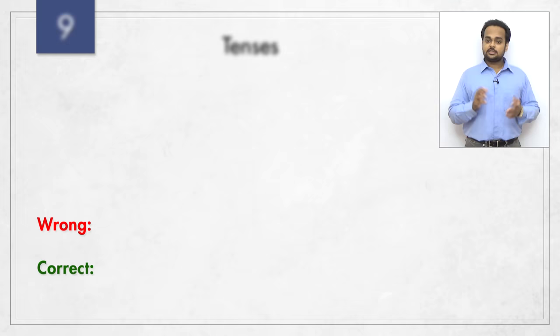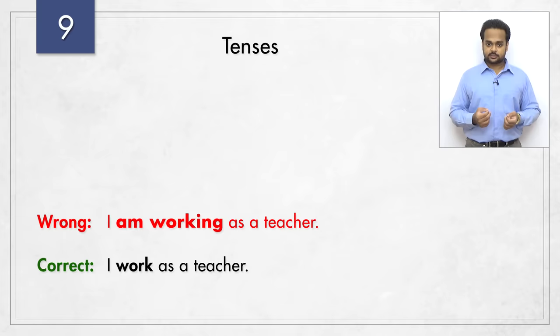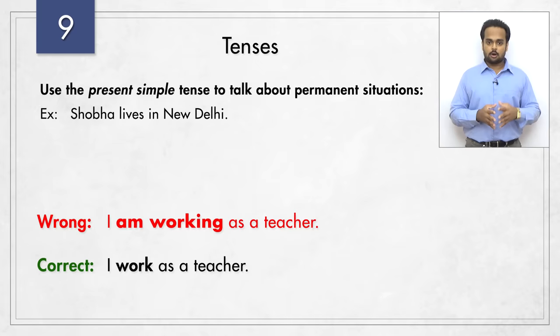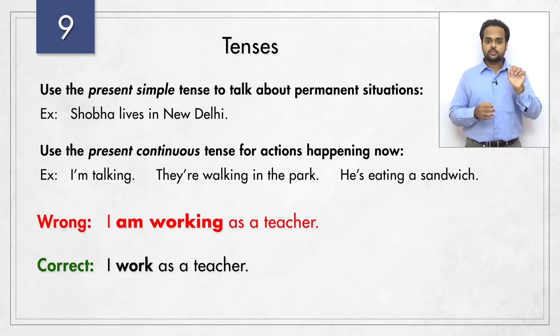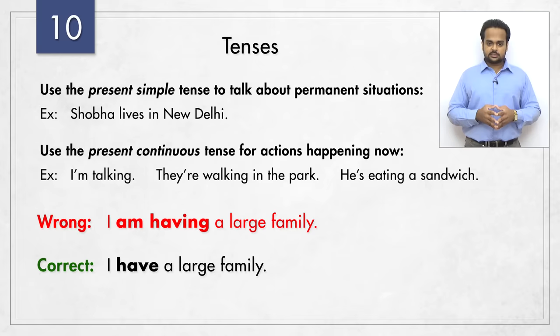Let's now turn to errors in the tenses. Our first sentence is 'I am working as a teacher' – this is wrong. 'I work as a teacher' is correct. Use the present simple tense to talk about your occupation or other permanent situation. For example, 'Shobha lives in New Delhi.' You only use the present continuous tense for actions that are happening right now – 'I am talking,' 'they are walking in the park,' 'he is eating a sandwich,' etc. Here's a similar error – 'I am having a large family.' You should say 'I have a large family,' because this expresses a general situation, not an action happening right now. What about 'I don't think she is recognizing me'? It should be 'I don't think she recognizes me.'